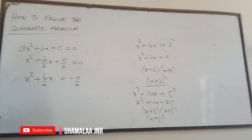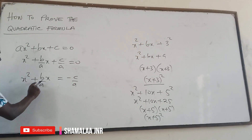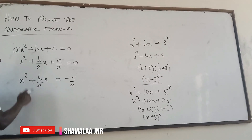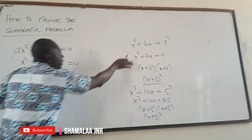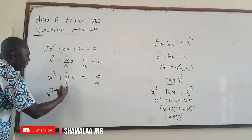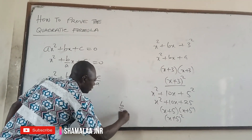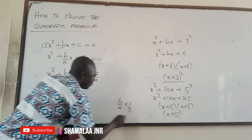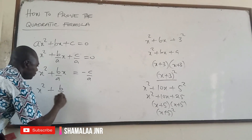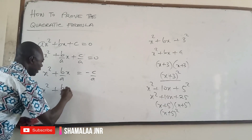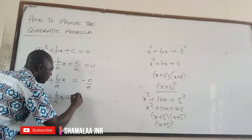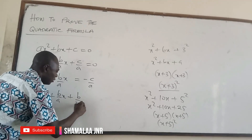Look at the board — we have x² + (b/a)x. If you want to complete the square, you take half the coefficient of x and square it. The coefficient of x here is b/a, so half of that is b/2a. So to complete the square, you add (b/2a)².